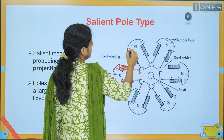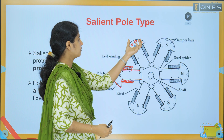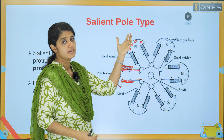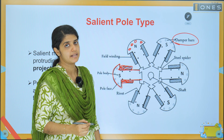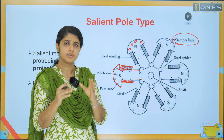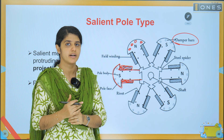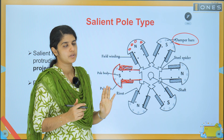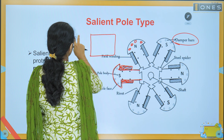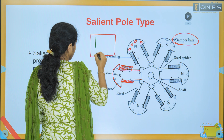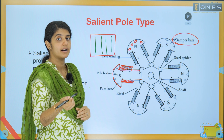In the salient pole machine, the poles have a shoe portion and an end portion. We also have damper windings — damper bars — placed in the pole face, similar to squirrel cage bars. Copper bars are placed in the pole face with connections on two sides.